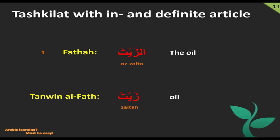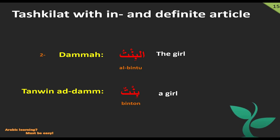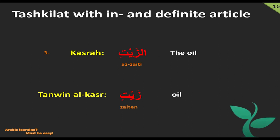In the first example: 'Az-Zayta' has fatha on it. Without Al-Attarif, fatha is converted to Tanween Al-Fatha at the end of the noun and pronounced 'Zaytan'. In the second example: 'Al-Bintu' has dhamma on it. Without Al-Attarif, dhamma is converted to Tanween Al-Dham at the end of the noun and pronounced 'Bintun'. In the last example: 'Az-Zayti' has kasra on it. Without Al-Attarif, kasra is converted to Tanween Al-Kasr at the end of the noun and pronounced 'Zaytan'.